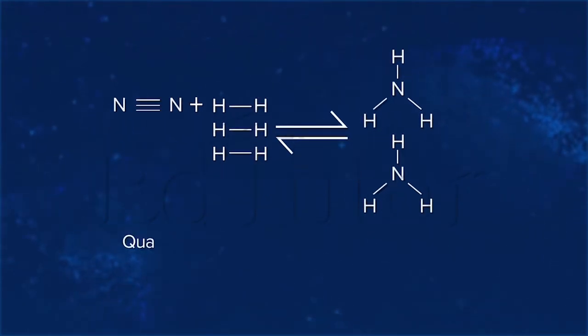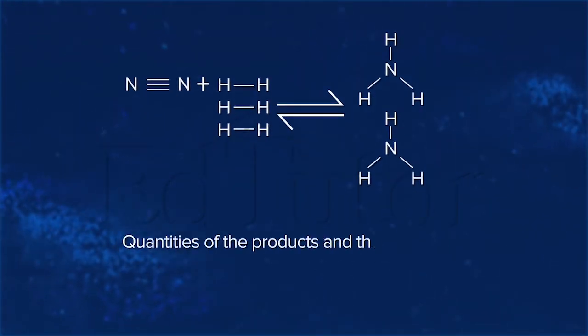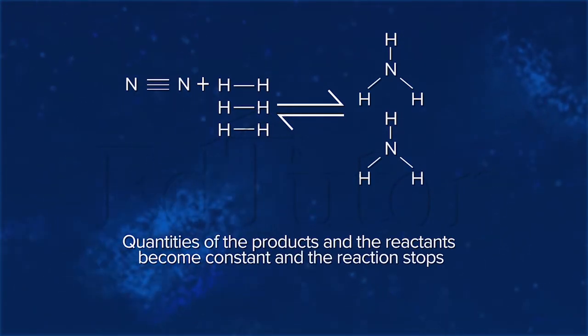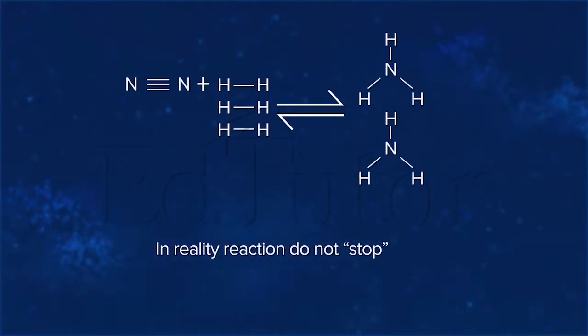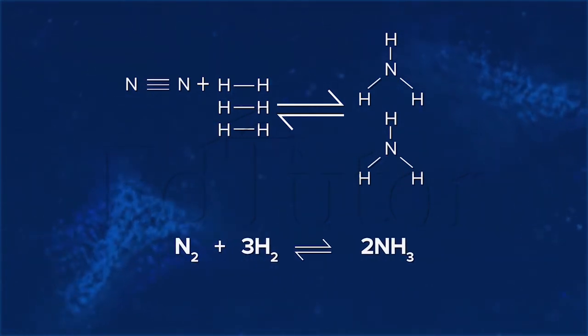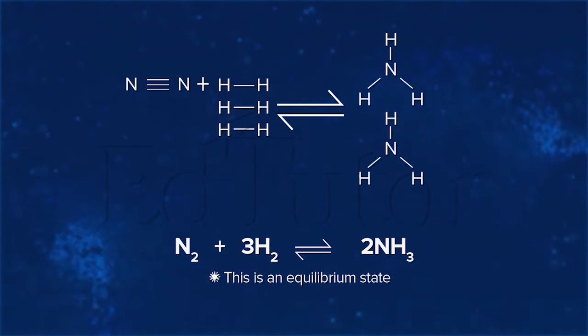At this point, the quantities of the products and the reactants become constant and it appears that the reaction stops. In reality, reactions do not stop. Instead, they take place in both directions at an equal rate. This is what is called an equilibrium state.